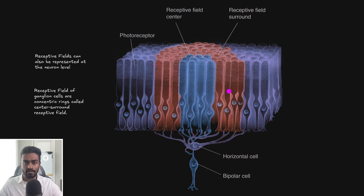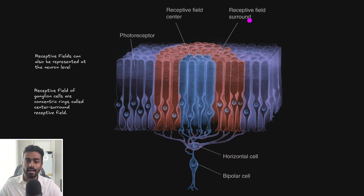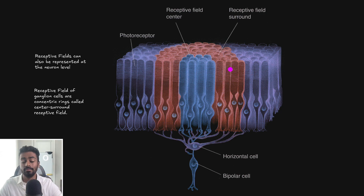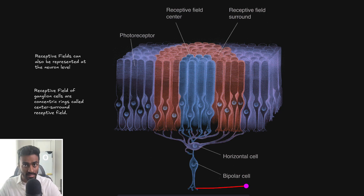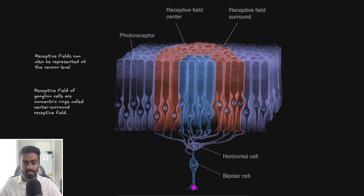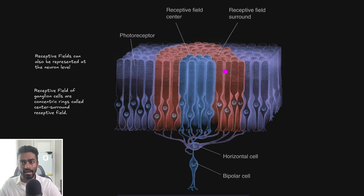The inner concentric circle is known as the center and the outer is known as the surround. How do we get an inner and outer circle? It depends on how the neurons are physiologically synapsing into the retinal ganglion cell. The center cells directly synapse onto the bipolar cell, which directly synapses onto the ganglion cell. The surround cells synapse into horizontal cells, which then synapse into bipolar cells, which then synapse into the retinal ganglion cell being studied.